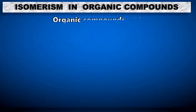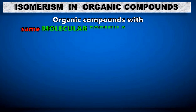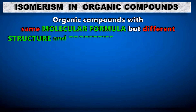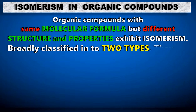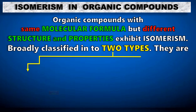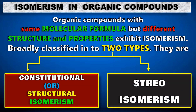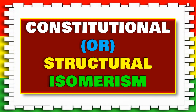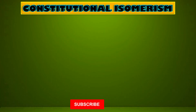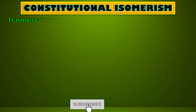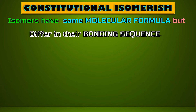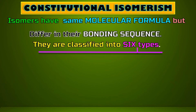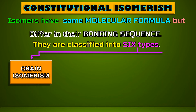Organic compounds with the same molecular formula but different structure and properties exhibit isomerism. They are classified into 2 types: Constitutional and Stereoisomerism. Constitutional isomerism, otherwise known as Structural isomerism, talks about compounds having the same molecular formula but they differ in their bonding sequence. They are further classified into 6 types.